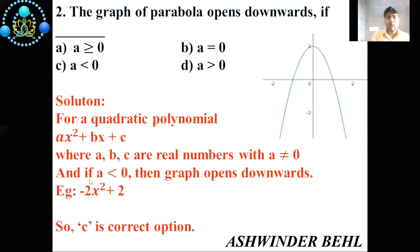If a is less than zero, then the graph opens downward. If we take one example: -2x² + 2. So now you can see with the help of this graph, we can easily identify answer c is the correct option.